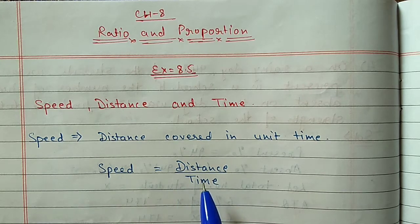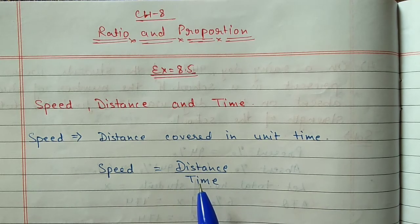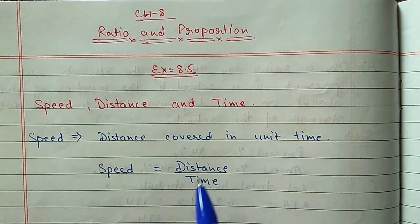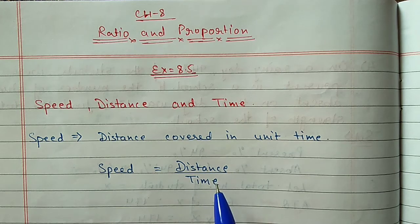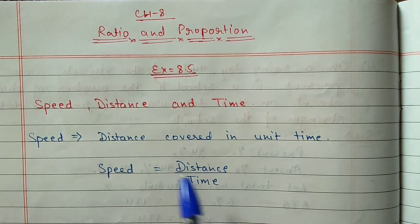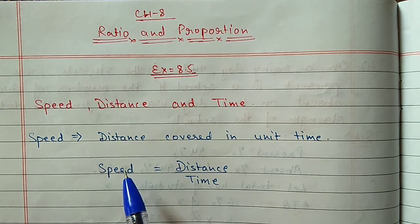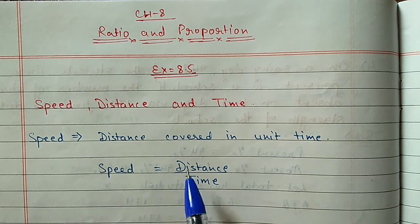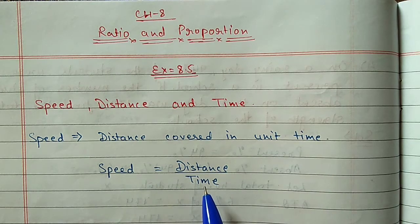We have a formula to calculate the speed: speed is equal to distance divided by time. Problems you will get based on this formula only. Sometimes distance and time will be given and you have to find out the speed. Sometimes speed and distance are given and you have to find out the time.